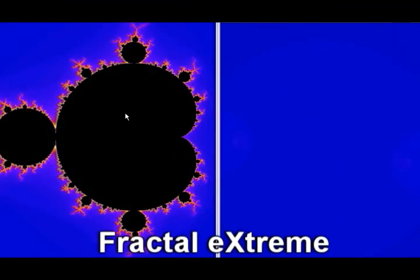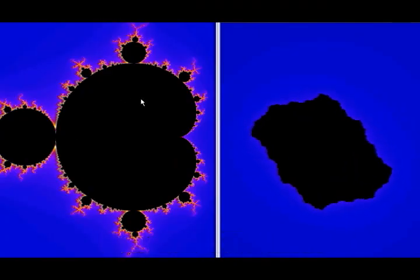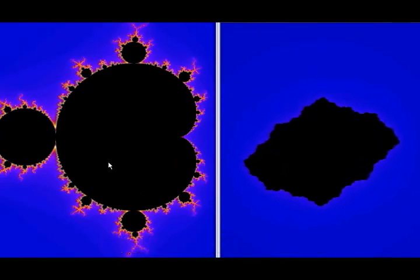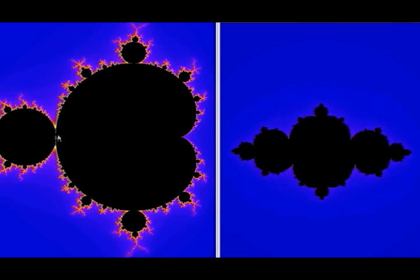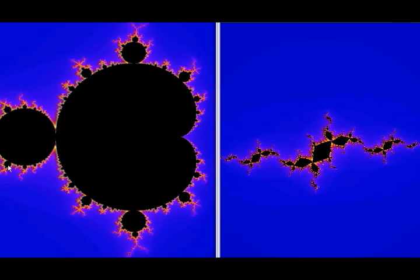And in fact, this program called Fractal Extreme lets you explore all the possible Julia sets. I am moving my mouse cursor around the Mandelbrot set on the left, picking c values. And the program draws the corresponding Julia set on the right. As expected, when I move my mouse cursor around the dark regions, we get the connected Julia sets.